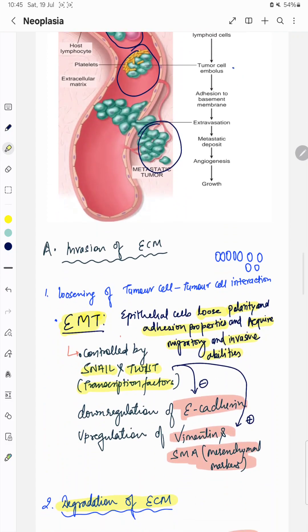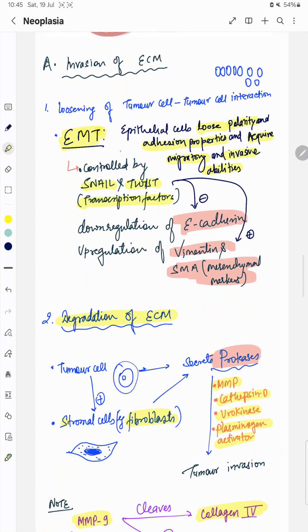First step is invasion of the surrounding extracellular matrix. Tumor cells start loosening of tumor-tumor cell interaction. This is known as epithelial mesenchymal transition, in which epithelial cells lose polarity and adhesion properties and acquire migratory and invasive abilities. This epithelial mesenchymal transition is controlled by transcription factors like Snail and Twist. They basically down-regulate E-cadherin. E-cadherin is responsible for cell adhesion.